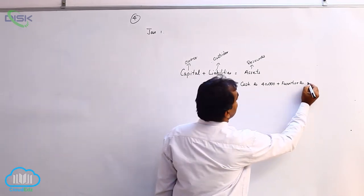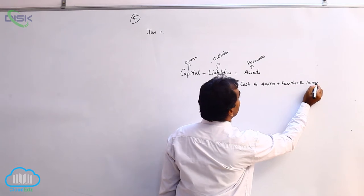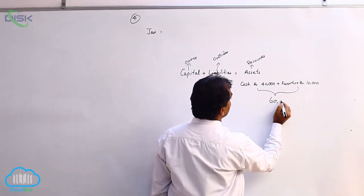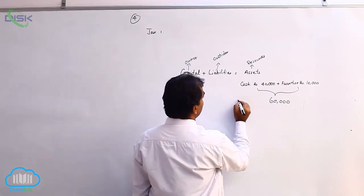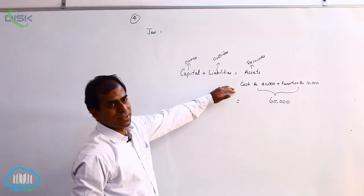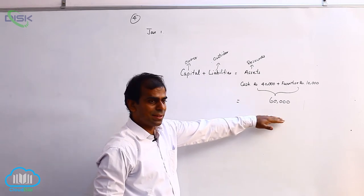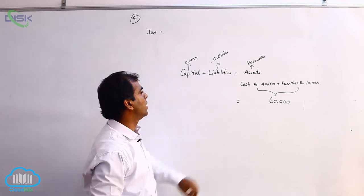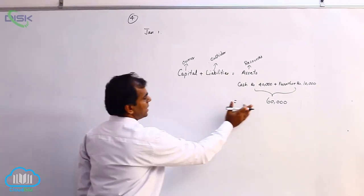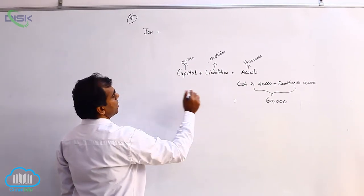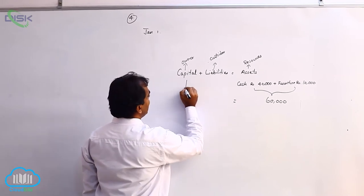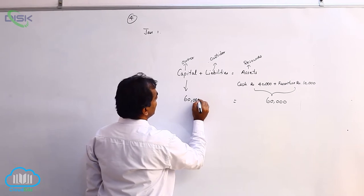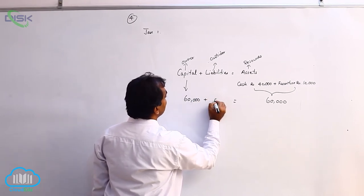So the business is owning total resources of 60,000 and to whom does this 60,000 worth of resources or assets belong? When nothing is stated, they only belong to owner. So that means we have only capital which is worth 60,000. That means there is no liability here.